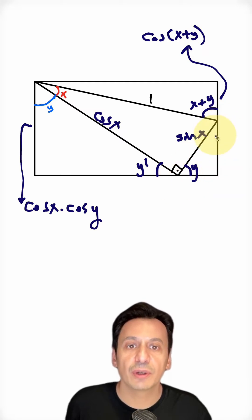When we look at the right triangle here, our hypotenuse is sine x and here we see the angle y. For the side opposite the angle y, we can say sine x times sine y.